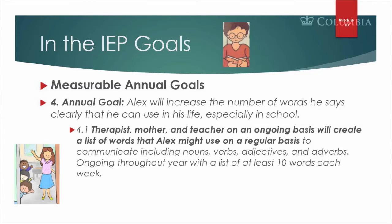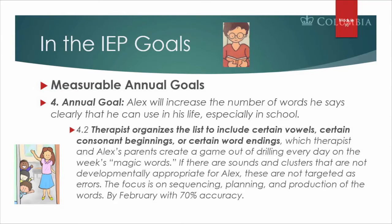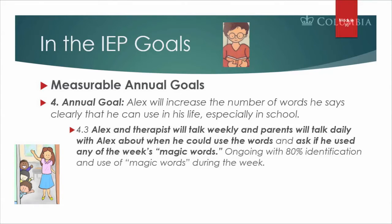The fourth annual goal is to increase the number of words he says clearly that he can use in school. The teacher, parents, and therapist identify a list of words that will help him communicate more — it could be the names of toys he likes, like Lego, or a food he likes, like cookie. He will keep repeating these magic words each week to expand and practice words that will be contextually useful in school. We need to get data back from the parent and teacher to encourage him to use those ten magic words.